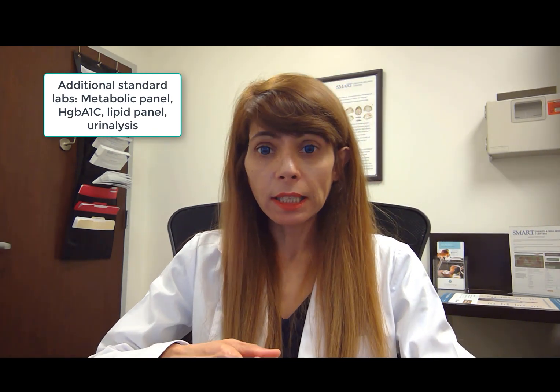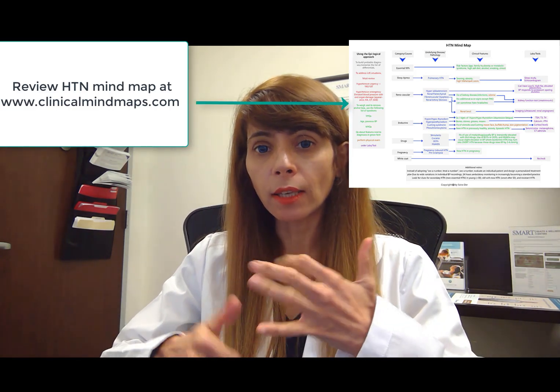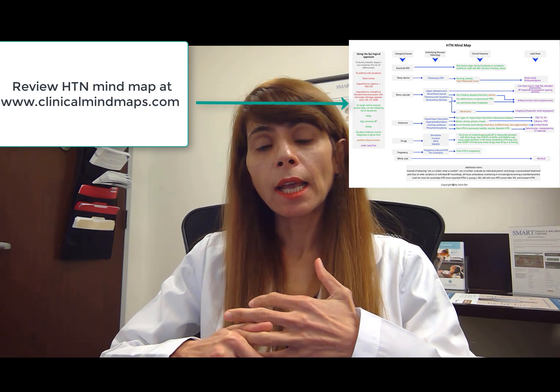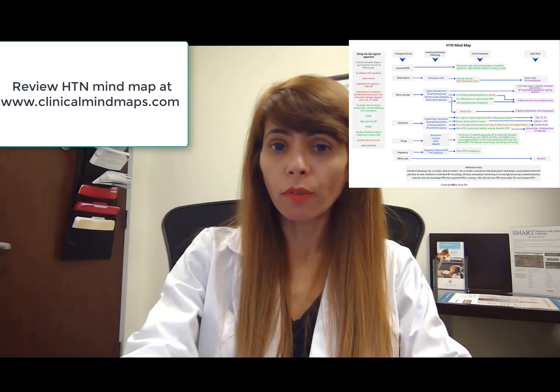A complete metabolic panel is extremely important to ensure kidney function is not declining and that sodium and potassium are normal. An abnormal potassium level should further raise suspicion for hyperaldosteronism. Finally, an echocardiogram is important to rule out hypertensive cardiomyopathy. After gathering all the history, physical exam, labs, and imaging, we arrive at the diagnosis.